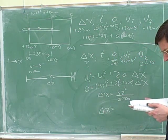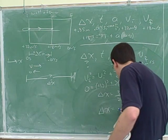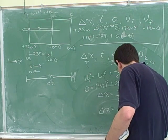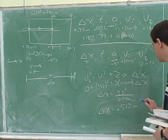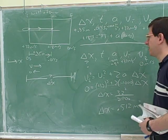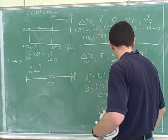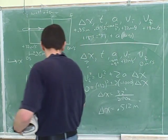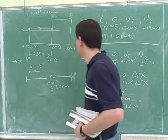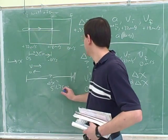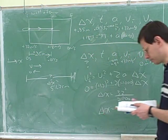What did you end up with for delta x? It came out as 0.512 meters, but maybe we should put that into centimeters since that's what we were given in the original problem — so that's 51.2 centimeters. Does that match our prediction? Yes, that's bigger than the 35 centimeters from before.